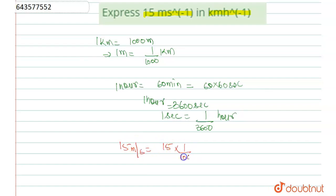One meter is equal to one upon thousand kilometer, and one second is equal to one upon 3600 hour. So 15 meter per second, when zeros cancel, it will be equal to 54 kilometer per hour. Final answer is 54 kilometer per hour.